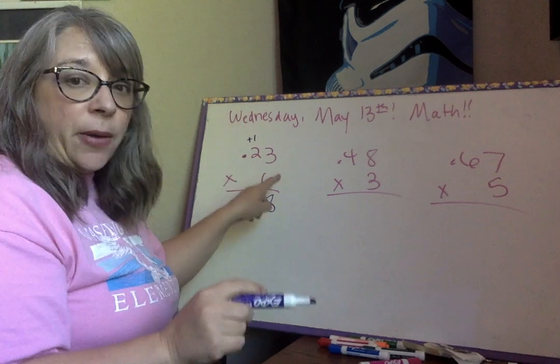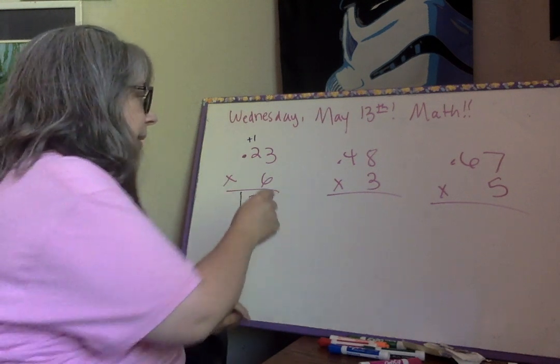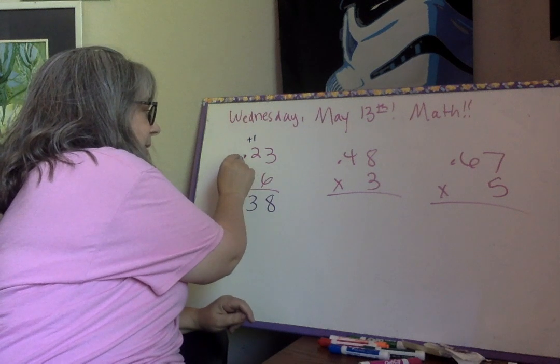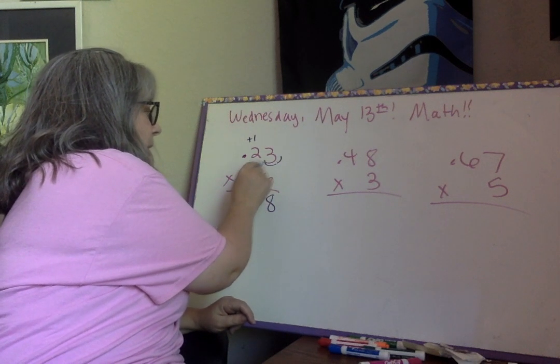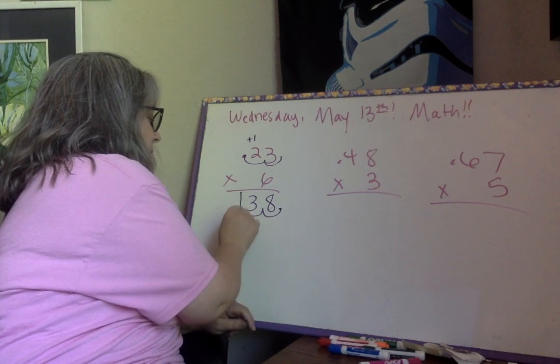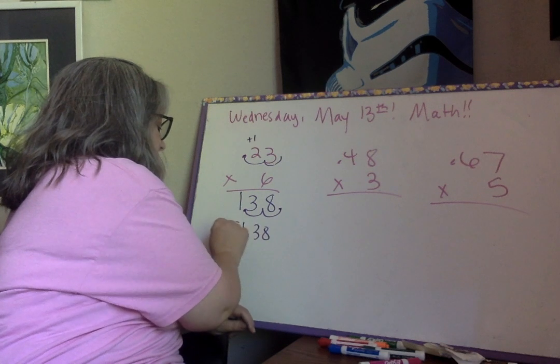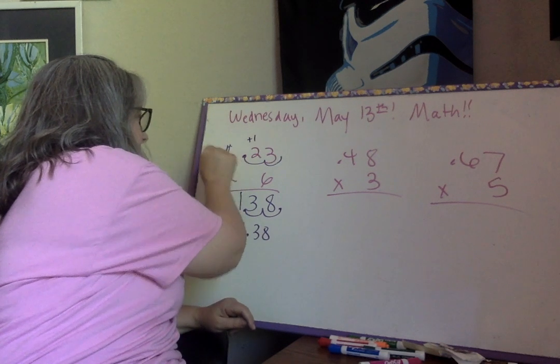So now we have to figure out the decimal. The decimal, we have to make our hops. Remember doing that. We have to hop. So we have to get to this decimal. We're going to start here. One, two. There's our two hops. We're going to do the same thing here. One, two. There's our decimal. So we have $1.38.